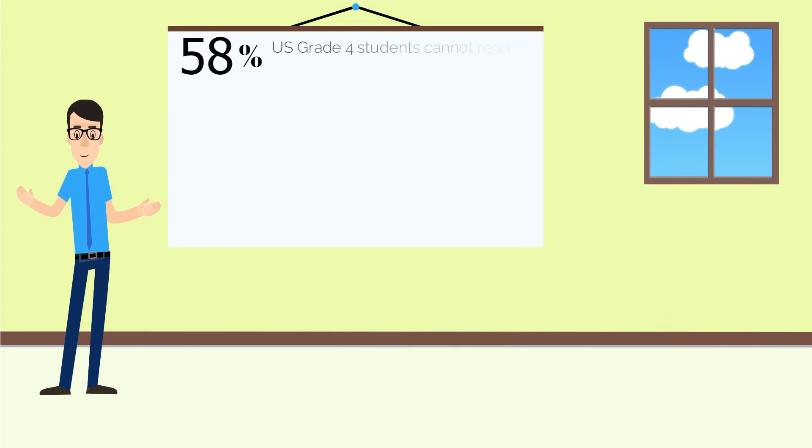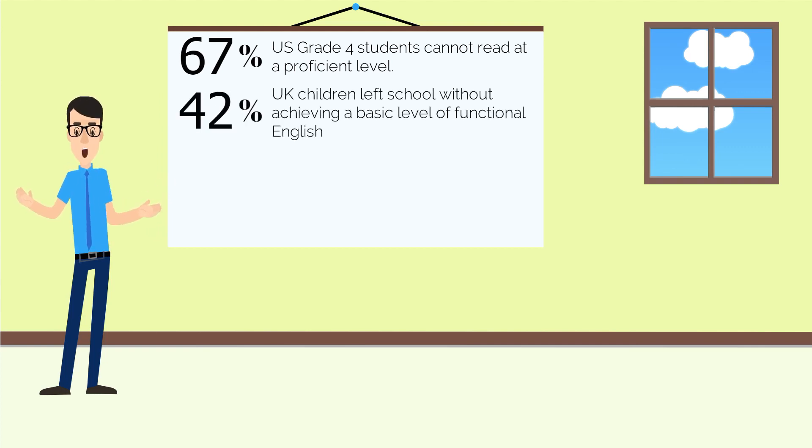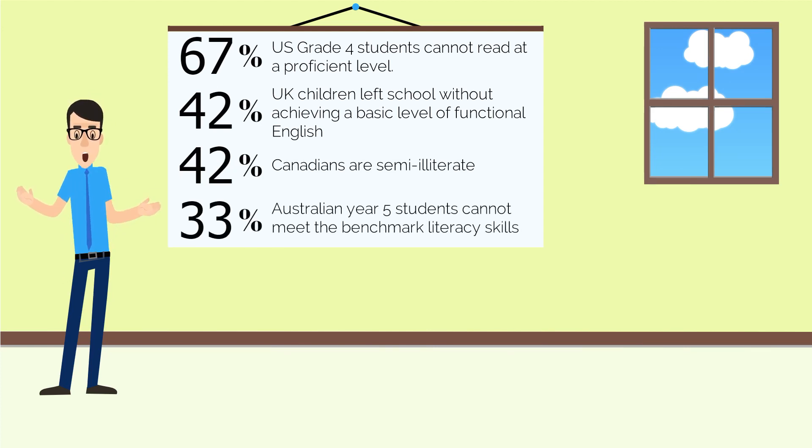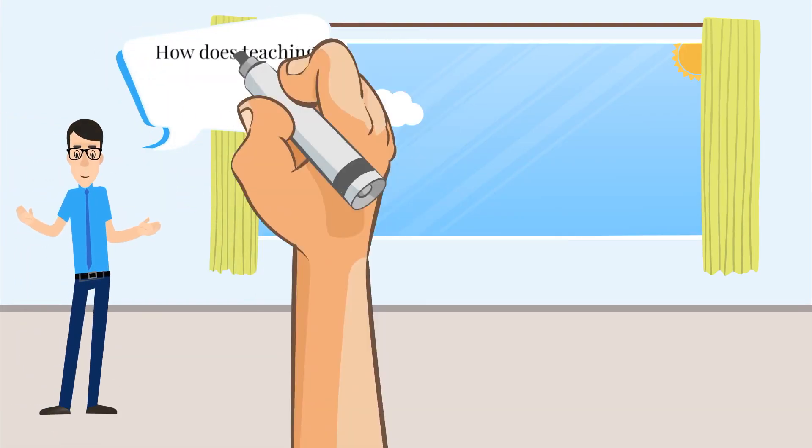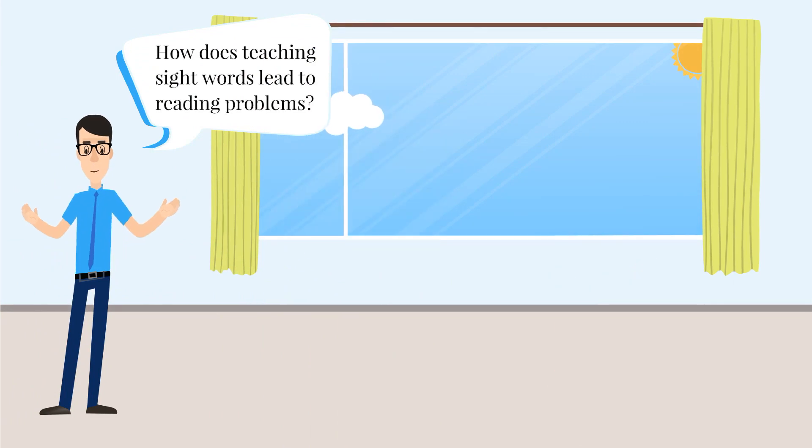If you have a child with reading difficulties, it's not your fault. It is because of how reading is taught at schools. It is because of whole language-based learning and sight words that we have so many children with reading difficulties. Did you know that in the US, 67% of all grade 4 students cannot read at a proficient level. 34% cannot achieve reading abilities of the lowest basic level. In the UK, 42% of children left school without achieving a basic level of functional English. 42% of Canadians are semi-illiterate. In Australia, 33% of all year 5 students cannot meet the benchmark literacy skills.